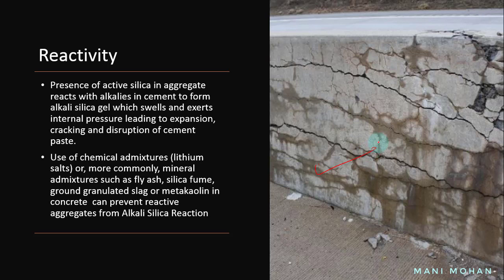Reactivity: the image shown here illustrates deterioration of concrete due to alkali-aggregate reaction. This is because of the reactive nature of aggregate attributed by the presence of active silica, which reacts with alkalis in cement to form alkali-silica gel that swells and exerts internal pressure, leading to expansion, cracking, and disruption of cement paste. A possible practice to prevent this is the use of chemical admixtures such as lithium salt, or mineral admixtures such as fly ash, silica fume, GGBS (ground granulated blast furnace slag), or metakaolin in concrete.